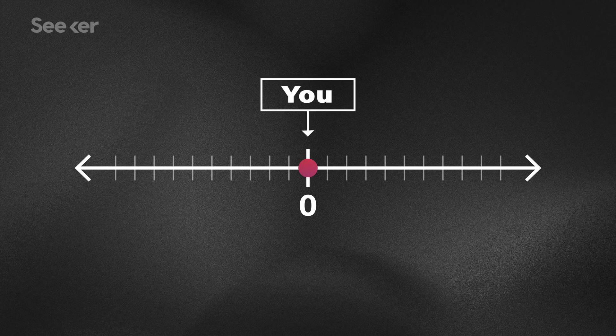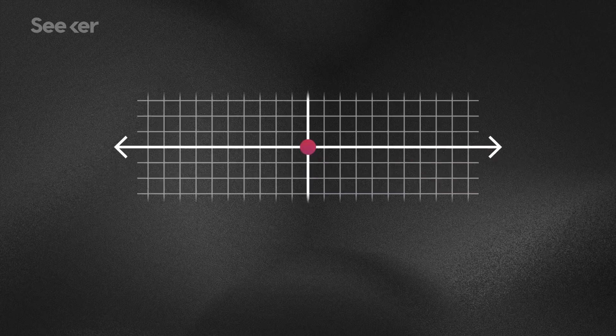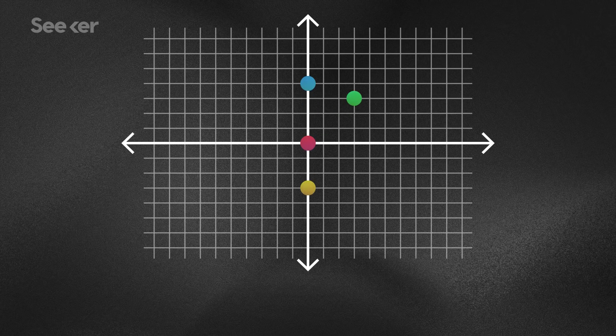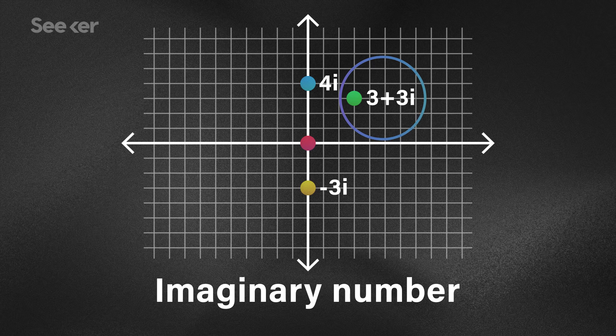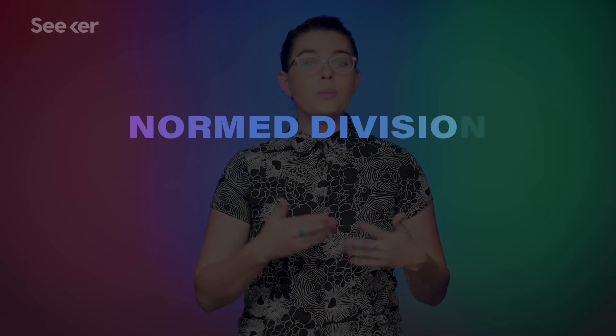Let's take it back to middle school for a sec. If you want to travel in one dimension, you add and subtract real numbers — here you are, the dot on your little line, and you want to move 7 units to the right? Great, that's plus 7. Let's take it into two dimensions. To make moves like this, you can use what's called an imaginary number. These can be combined with real numbers to make what are called complex numbers. Real numbers and complex numbers are the first two of four number systems in pure mathematics that we call the normed division algebras over the real numbers.